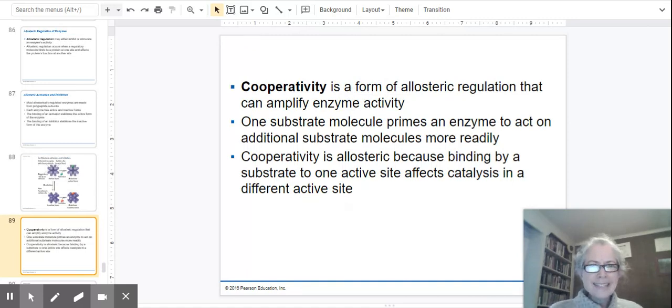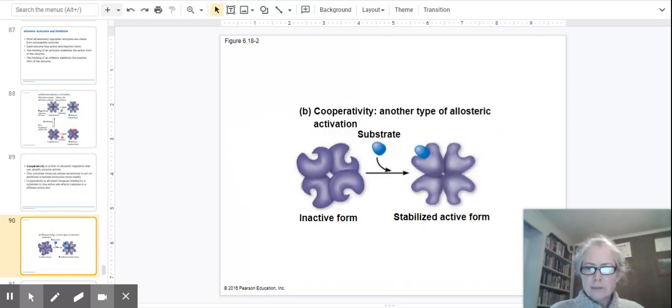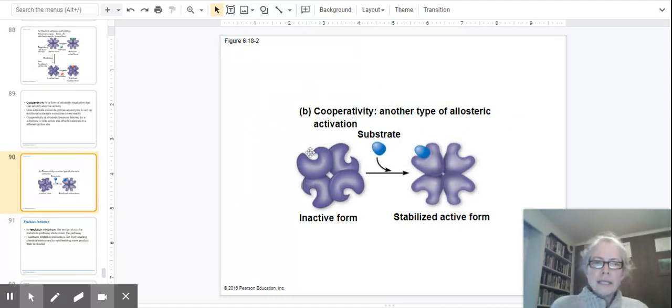Cooperativity is a specific example of allosteric regulation and it is where the regulatory molecule that influences the function of the enzyme is either the product or the reactant of the reaction that is catalyzed by that enzyme. For example, here we have some substrate that interacts with the enzyme to become product, and when it binds to the enzyme it causes the stabilization of that active form.